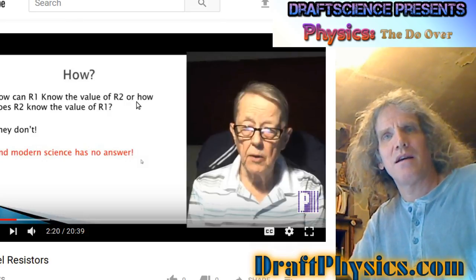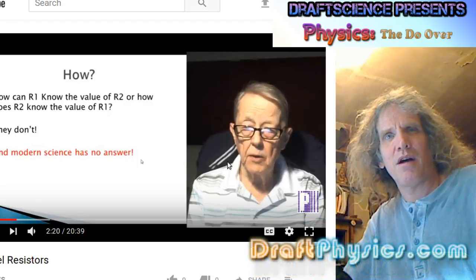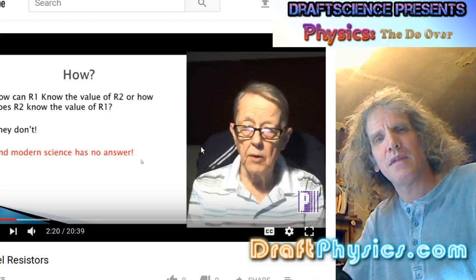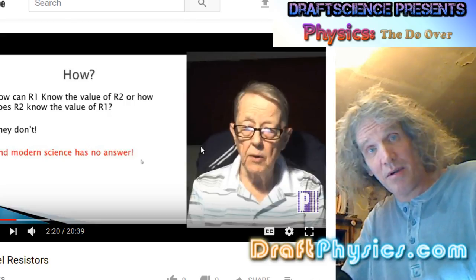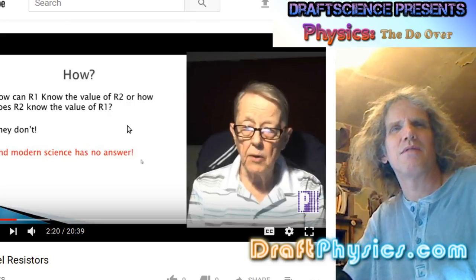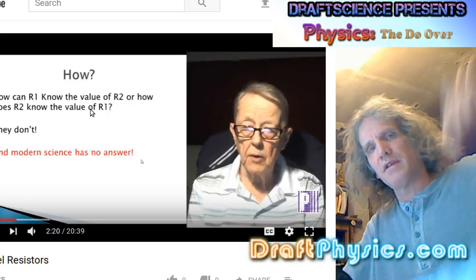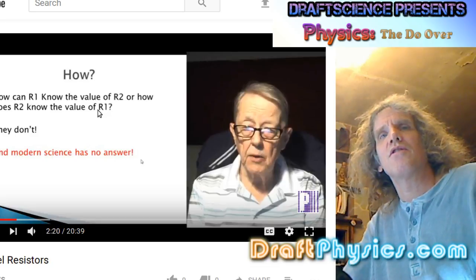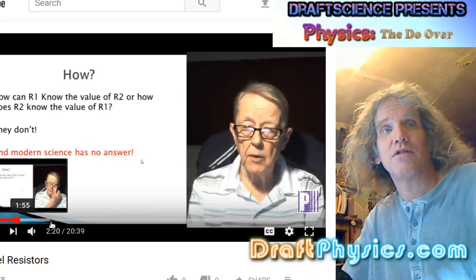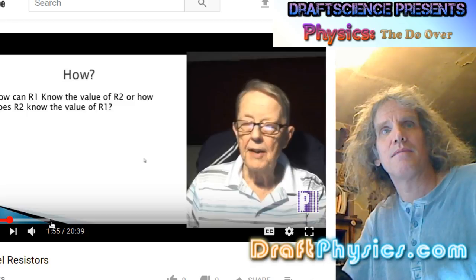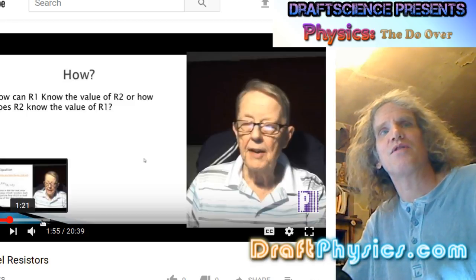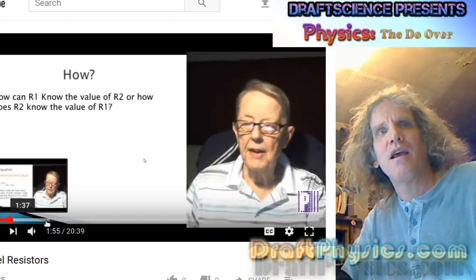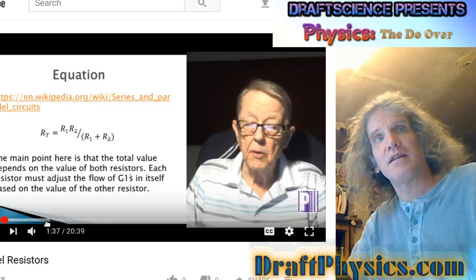So the basic idea is, apparently in physics there's a little bit of a problem because if you have two resistors in parallel, they somehow communicate with each other about what their real value should be. Now, I never really ran into this, but I didn't do a whole lot of designing of circuits. I just did make-it-work kind of circuits.